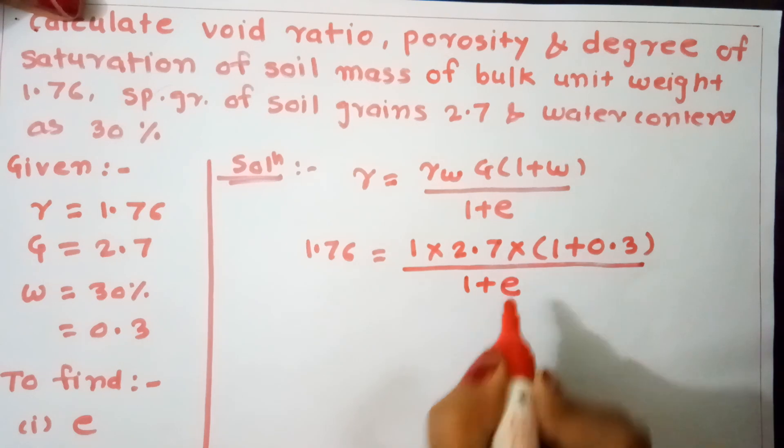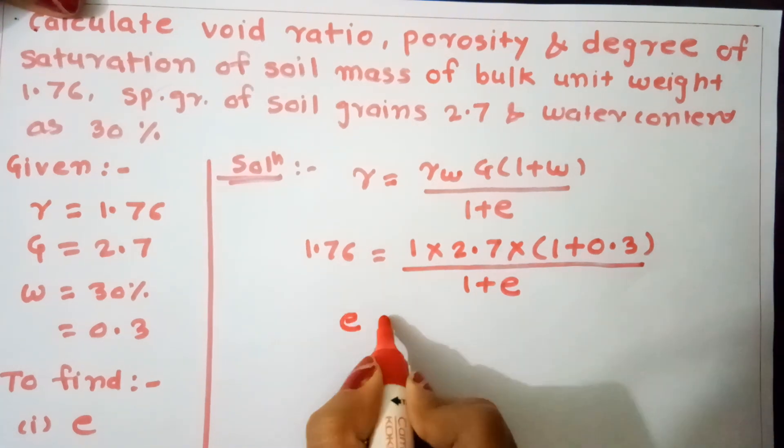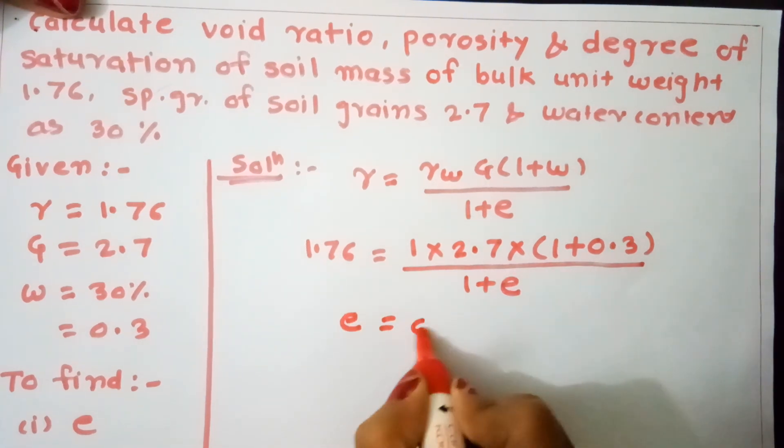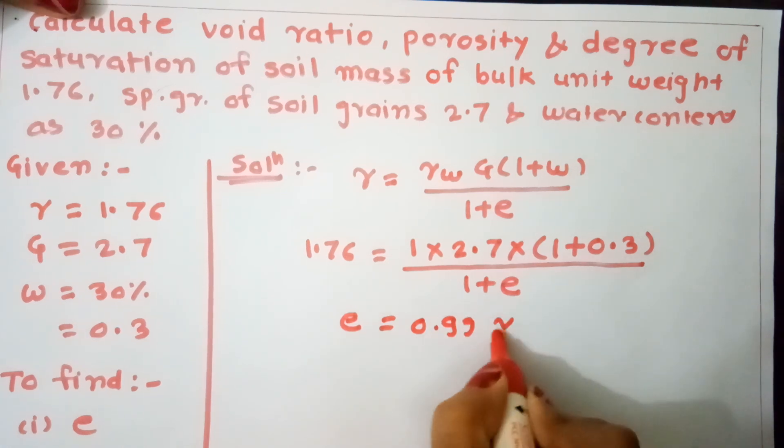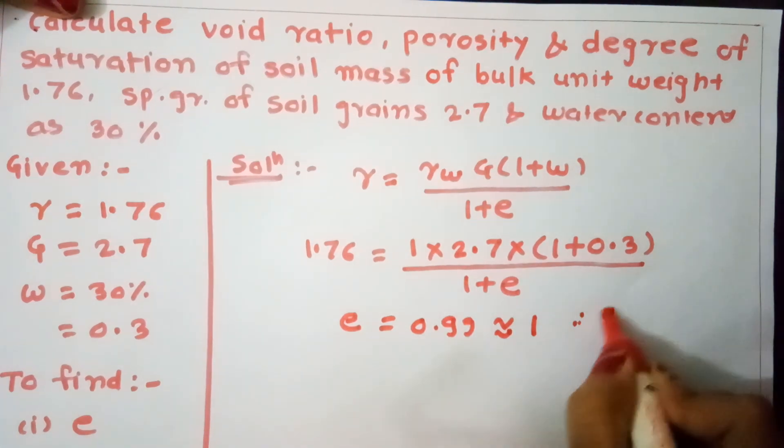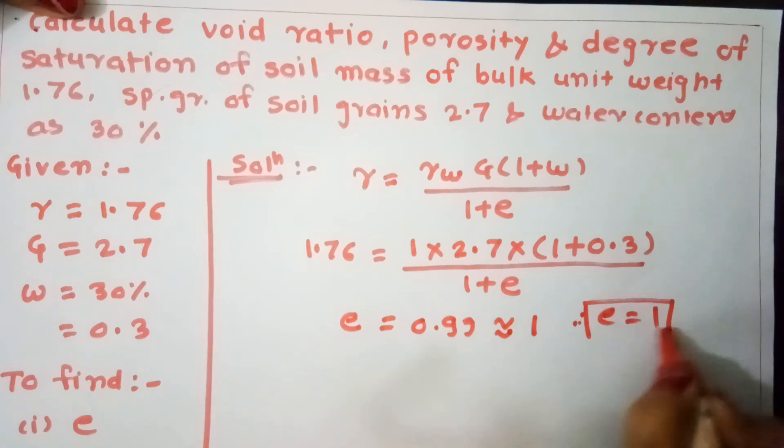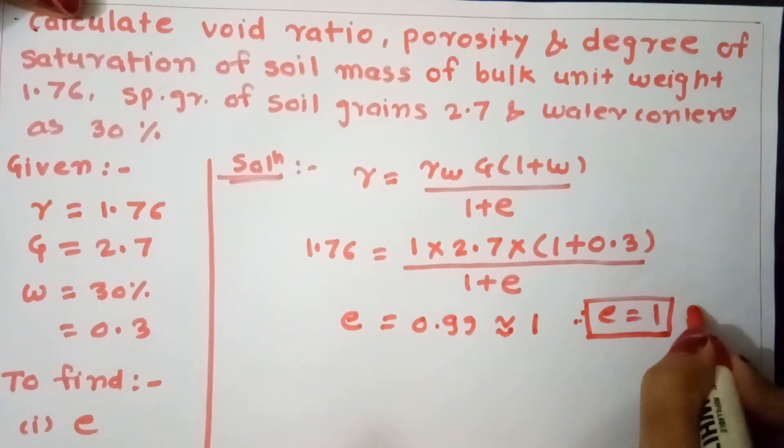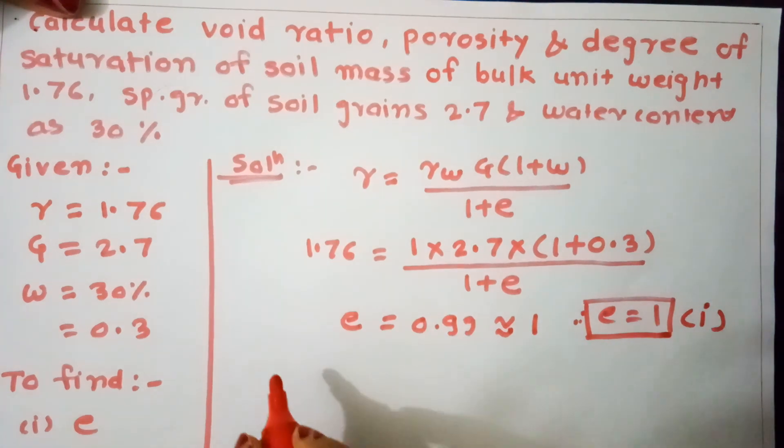Therefore, e = 0.991, approximately equal to 1. Void ratio e = 1 is the first answer.